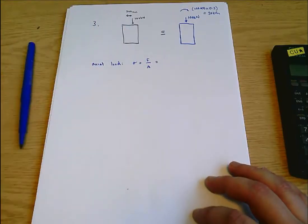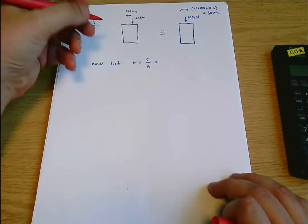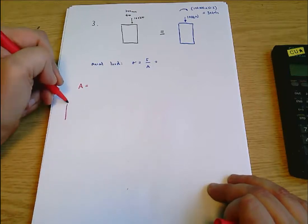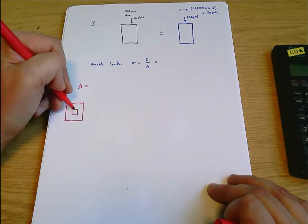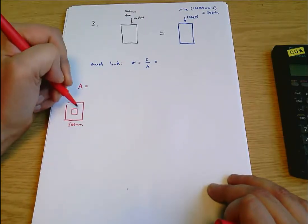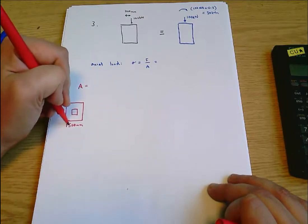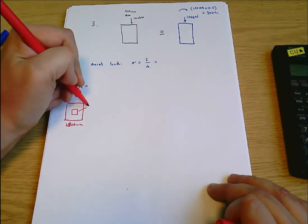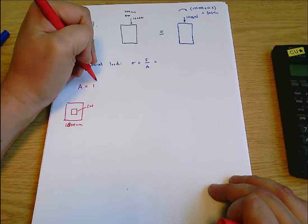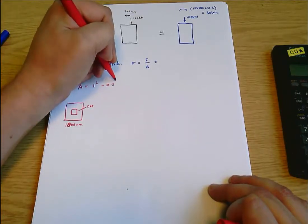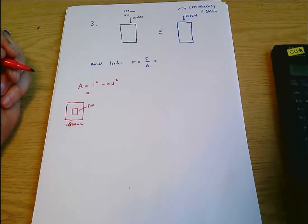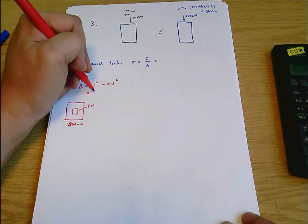We can probably do a side calculation just about the area for a second. Area equals - we're looking at a square like this with a square cut out of the middle. This is 1,000 millimeters squared and this is 500, so the area is 1,000 millimeters squared - that's a square meter - minus 0.5 meters squared, and that's going to be 0.75 square meters.